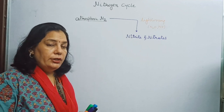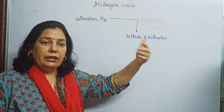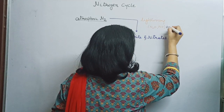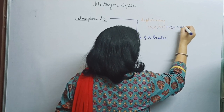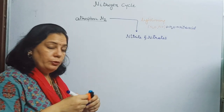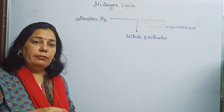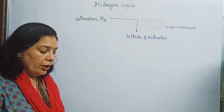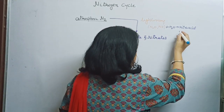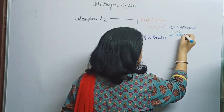These oxides of nitrogen react with water in the rain. When they react with water, they create nitric acid. This nitric acid comes to the ground with the rainwater. The nitric acid reacts with minerals present in the soil and forms nitrites and nitrates.